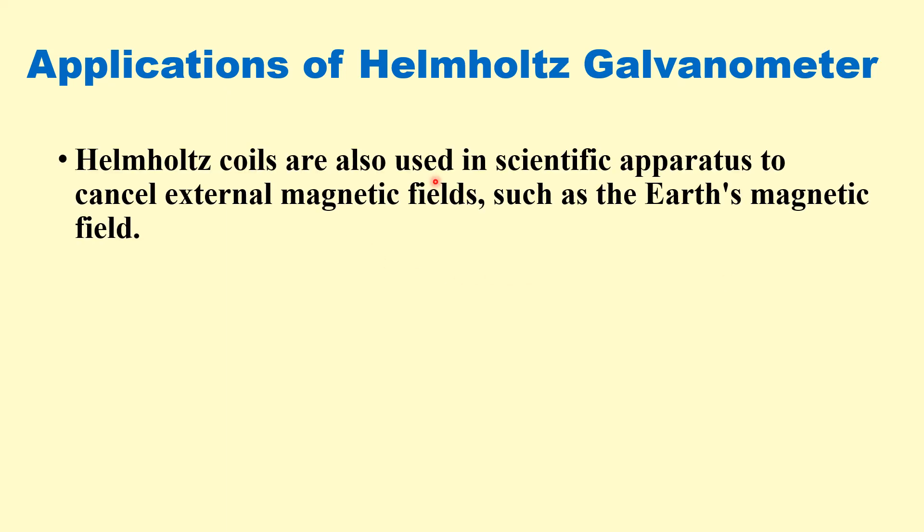What are the applications of Helmholtz galvanometer? Helmholtz coils are also used in scientific apparatus to cancel the external magnetic fields such as earth's magnetic field, because earth has a small magnetic field always. And to produce a region of nearly uniform magnetic field, we can use these Helmholtz coils.